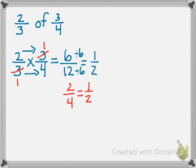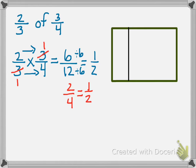Now I will show you how to draw a model. This says 2 thirds of 3 fourths, so first I'm going to partition my box into fourths. Now it says 3 fourths, so I'm going to just shade in 3 out of the 4 boxes.